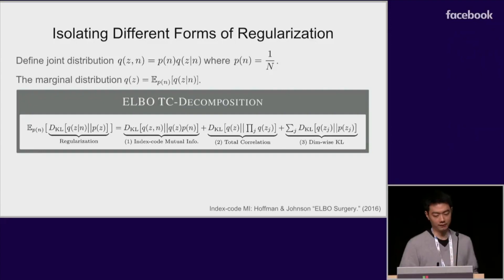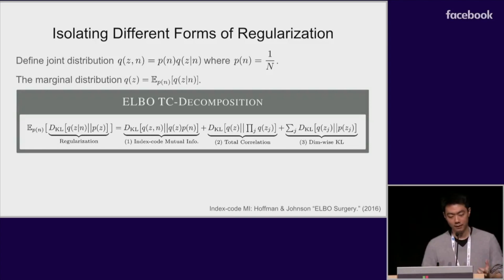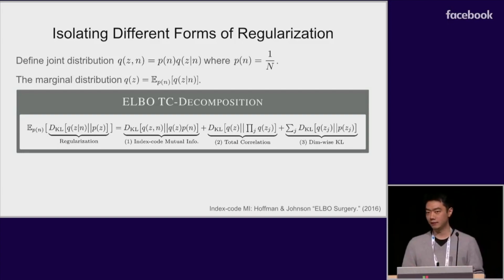So for a factorized prior, we can decompose that regularization term we saw previously into three terms. The first term is the mutual information between the data and z under this joint distribution that we've defined. The existence of this particular term in the ELBO was identified by Matt Hoffman and Matt Johnson in their ELBO surgery paper. Now the second term is total correlation. This term is interesting because minimizing it induces an independence regularization on q(z) and becomes zero if and only if q(z) is factorized. Despite its rather unfortunate name, it is a measure of dependence rather than simply of correlation. Finally, the third term is a dimension-wise KL that regularizes each dimension of z independently.